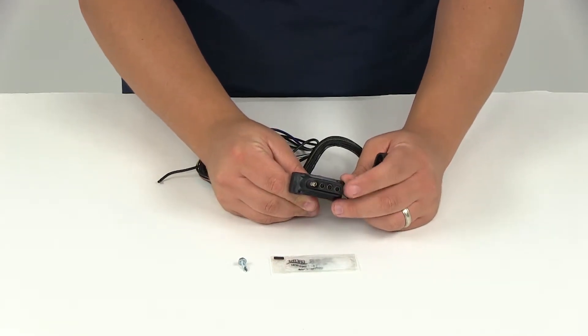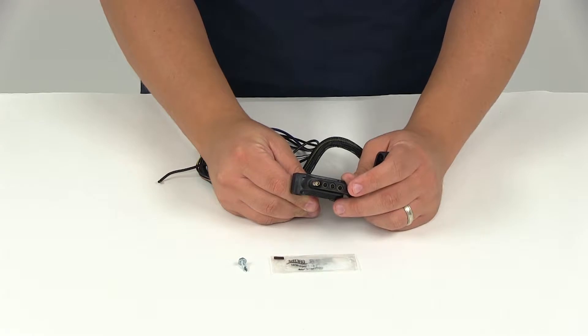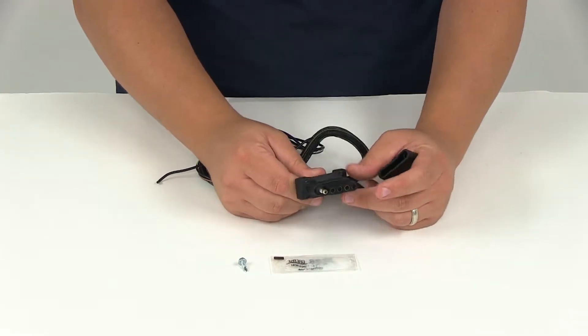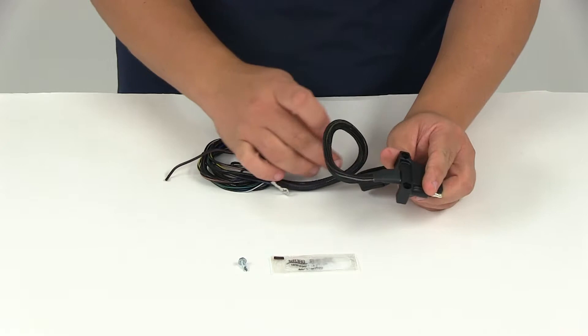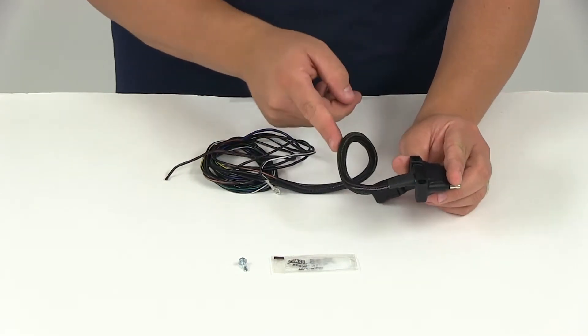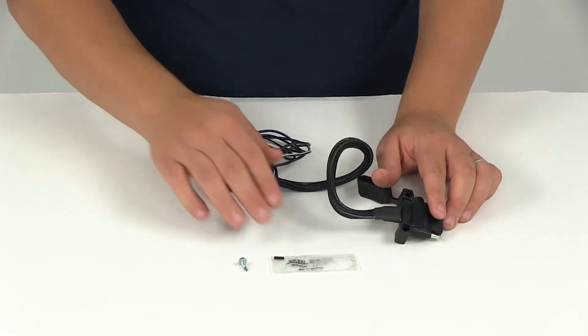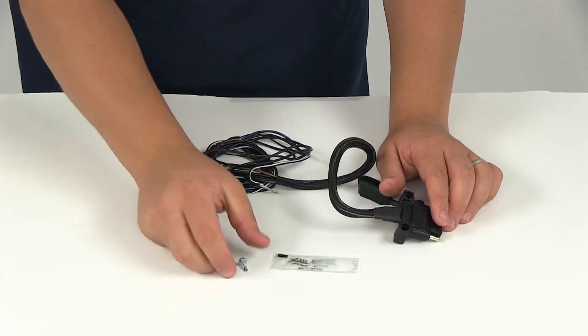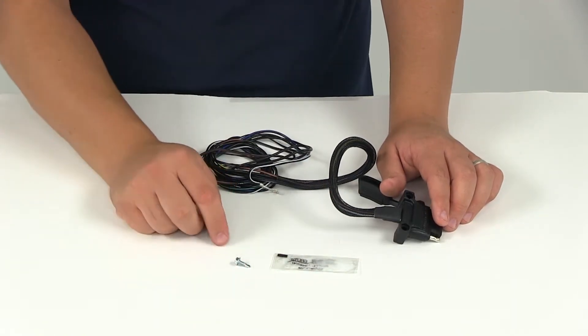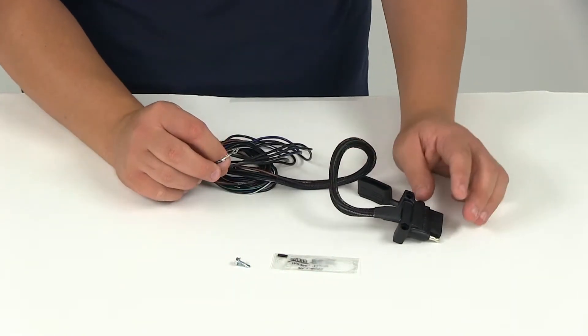The terminals have a tin plated design to resist corrosion. The nylon sleeve and heat shrink tubing protects the wires close to the connector, and you'll get a terminal grease packet as well as a self-tapping screw so you can secure the ground wire to the frame.